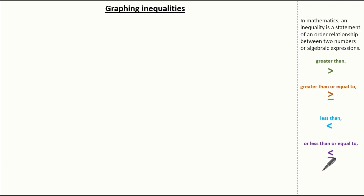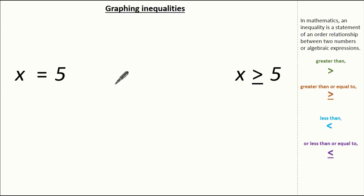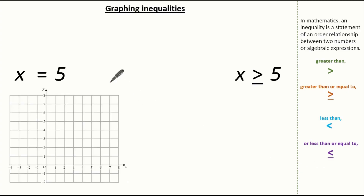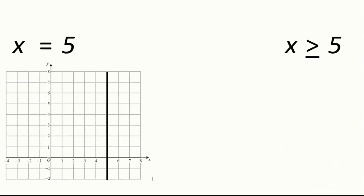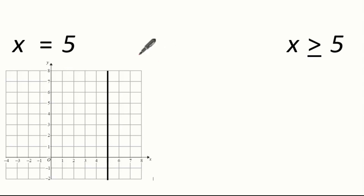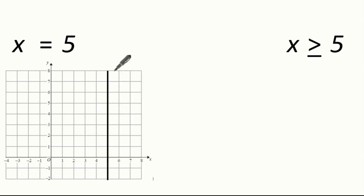So now we have the basics of our symbols, let's have a look at our graphs. Starting with x equals 5 — graphically, x equals 5 means wherever you go on this line, x is always 5. For example, at this point x is 5 and y is 1; at this point x is 5 and y is 5; at this point x is 5 and y is 6.5.